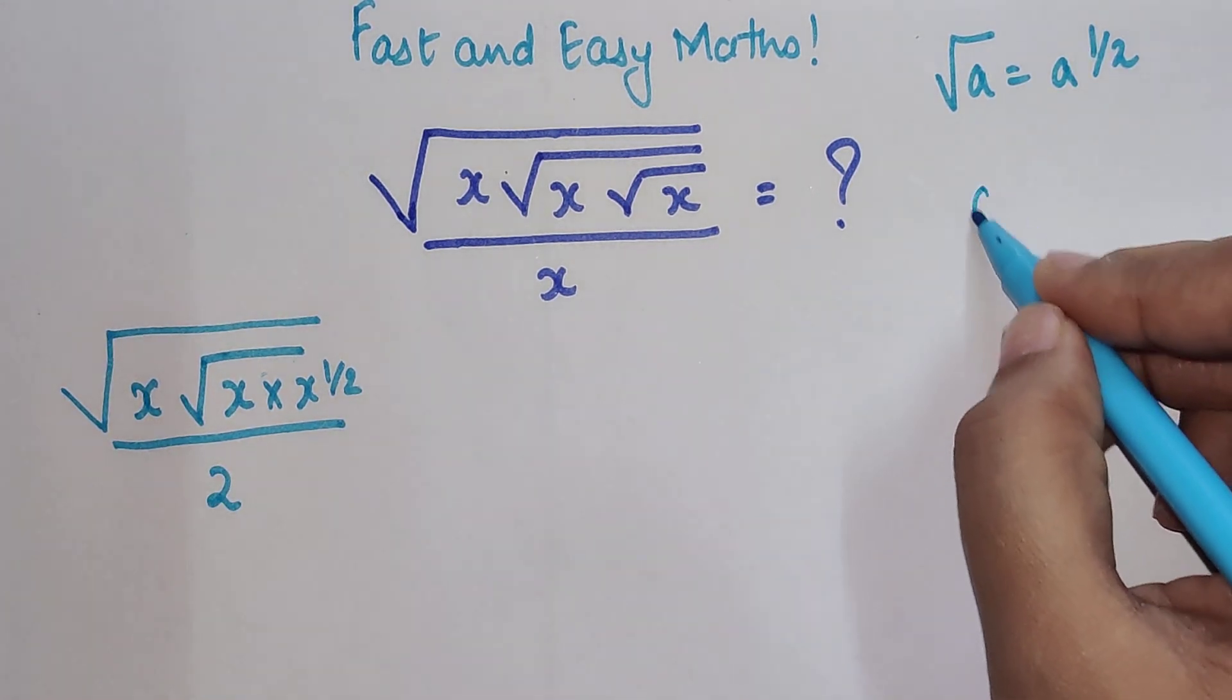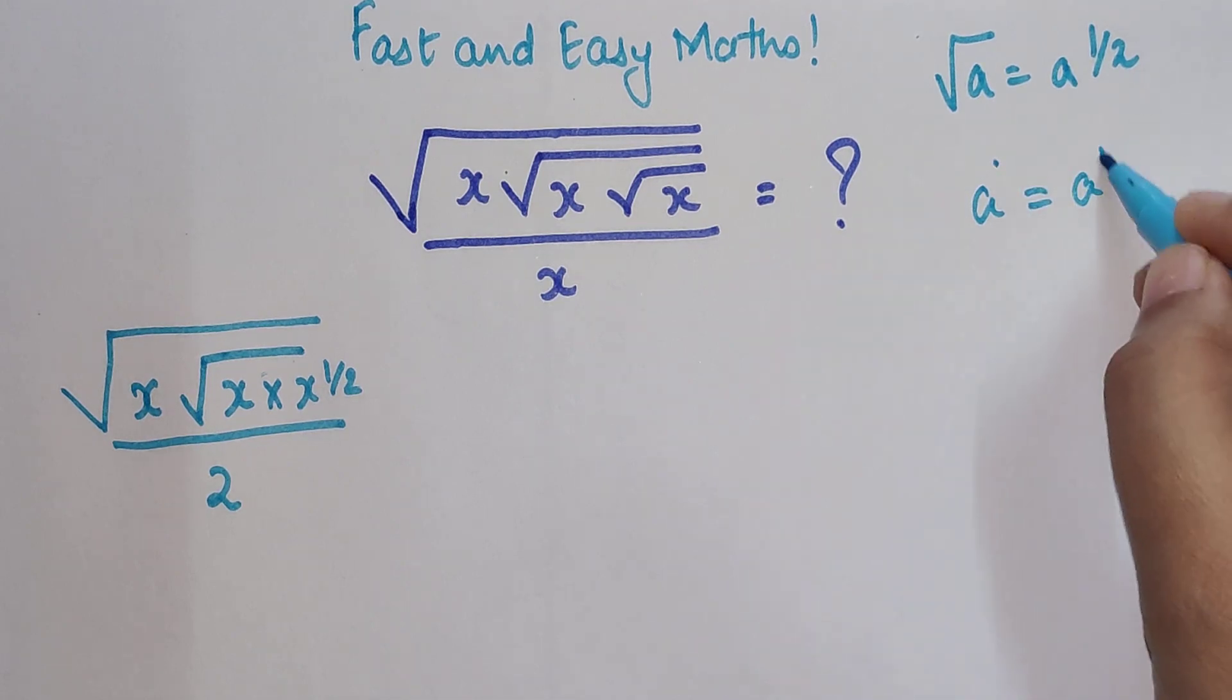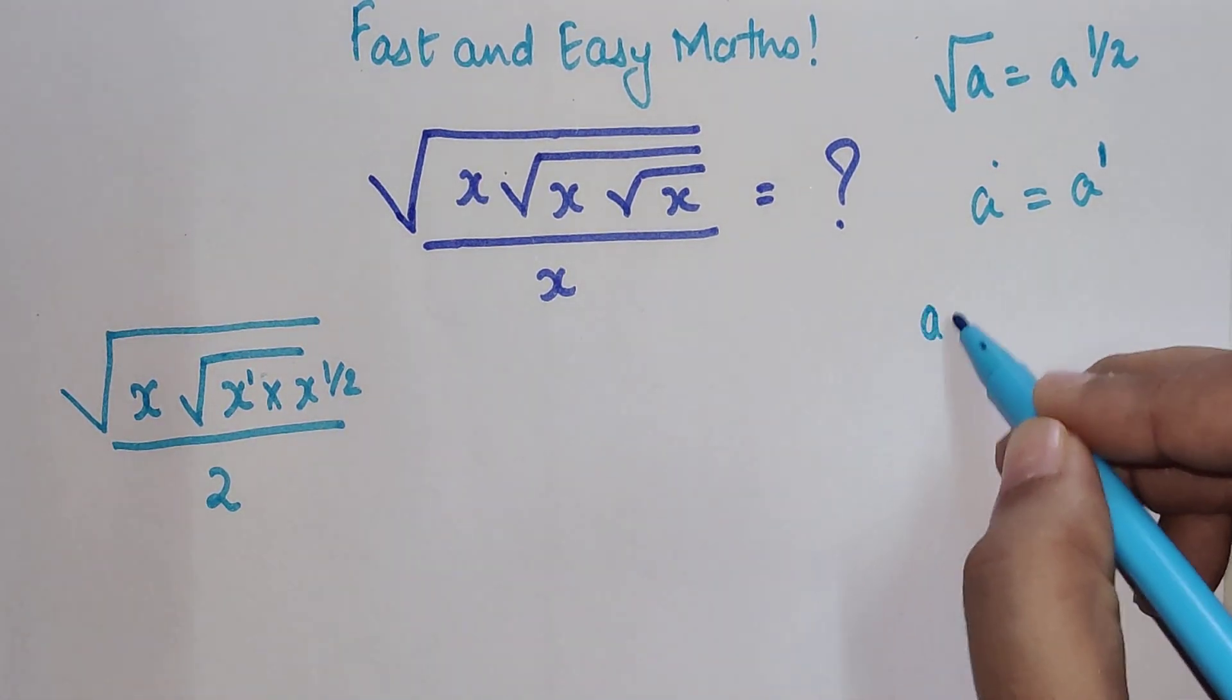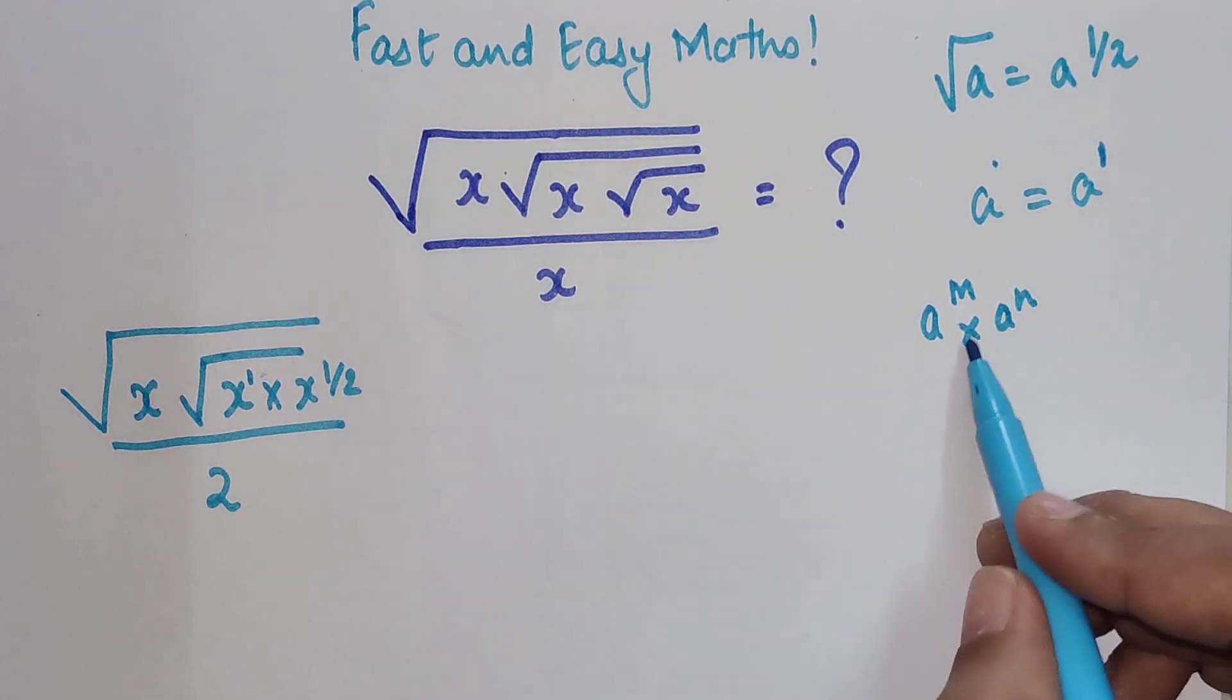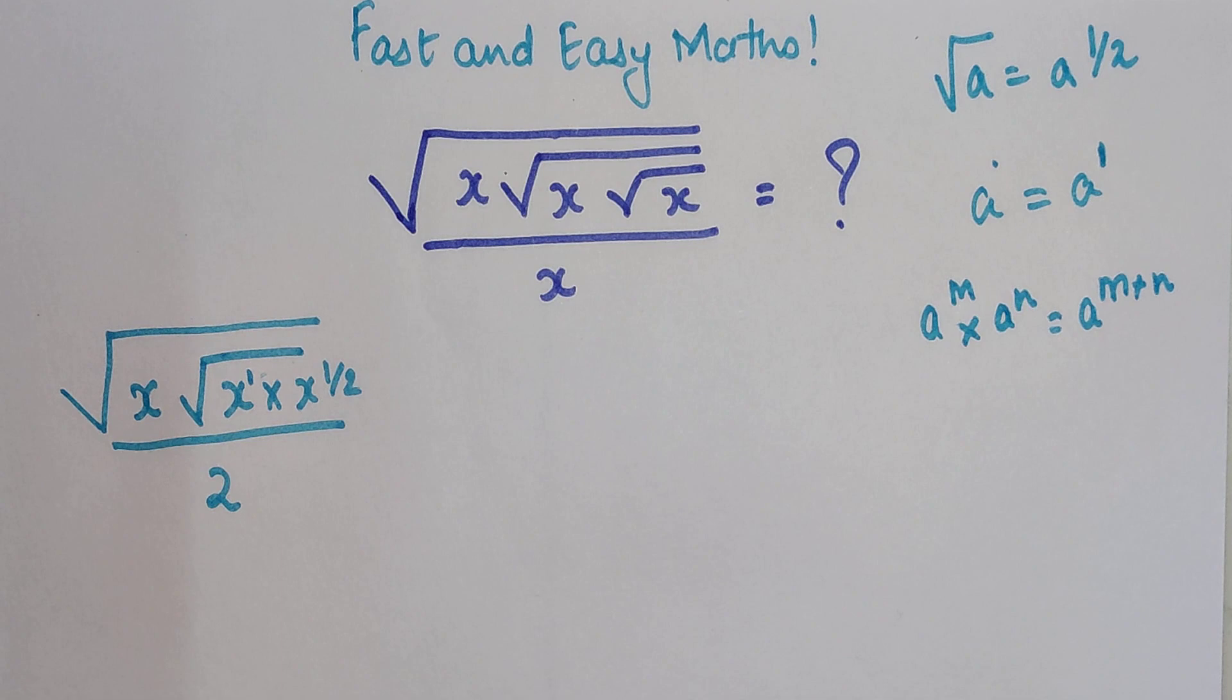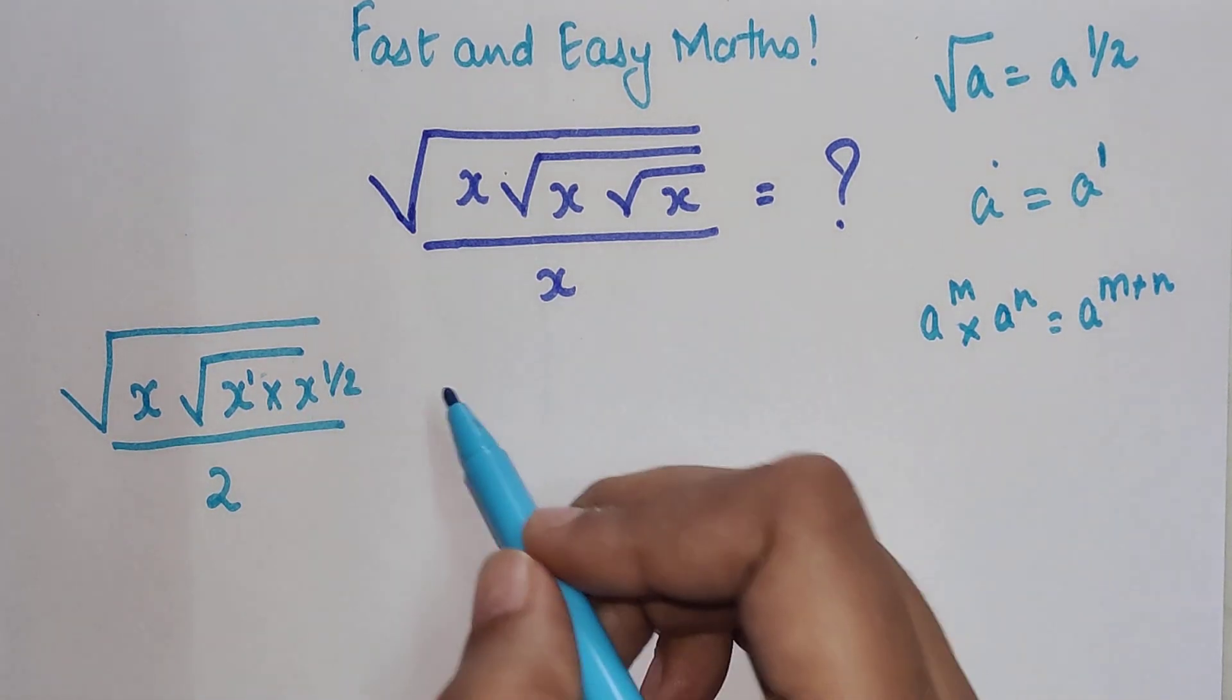Also remember any number which does not have any index is supposed to have an index of 1. So here I have index of 1. Now if I have a raised to m into a raised to n, when the bases are same and the indices are different, I can directly add these indices.